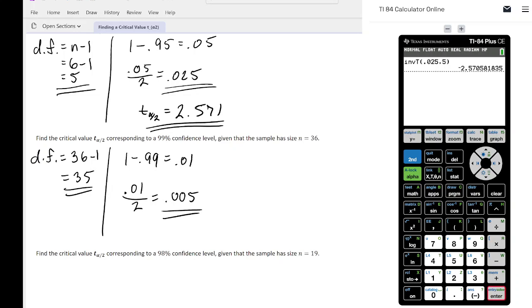Now all the hard work is done, just put it in the calculator. 2nd VARS, number 4. Area is going to be 0.005, our degrees of freedom are going to be 35. Go down to paste. Again, you're going to see that we're going to get a negative number. We will disregard it. So the T alpha over 2 value is 2.724.